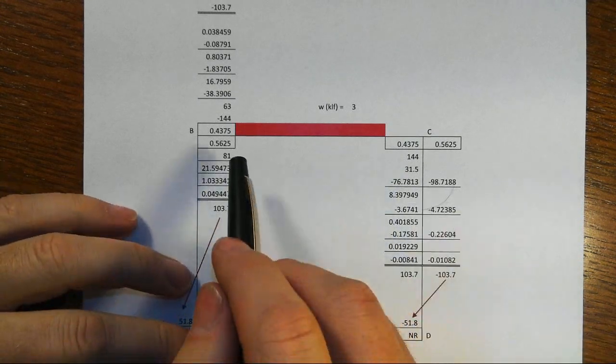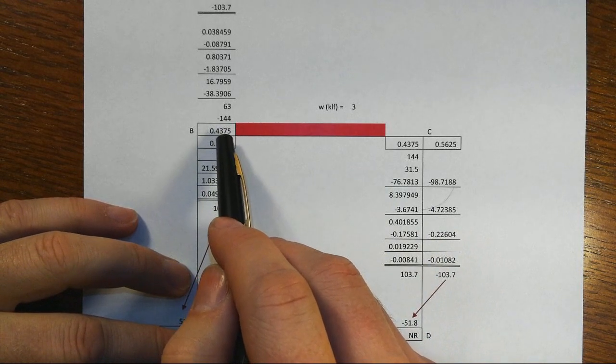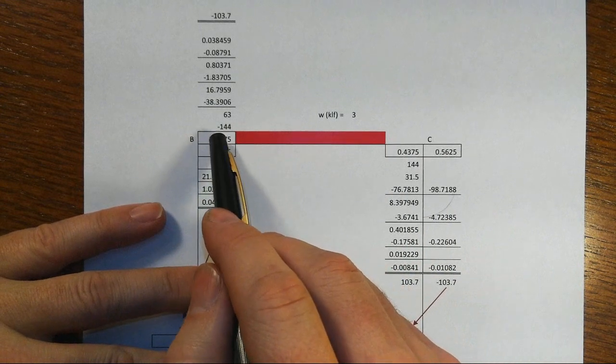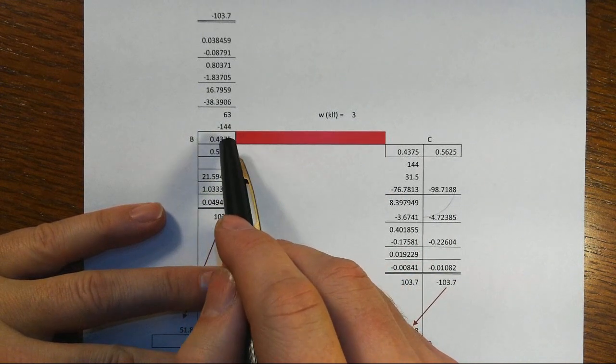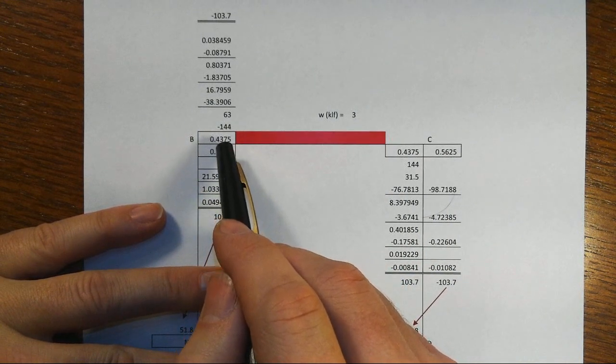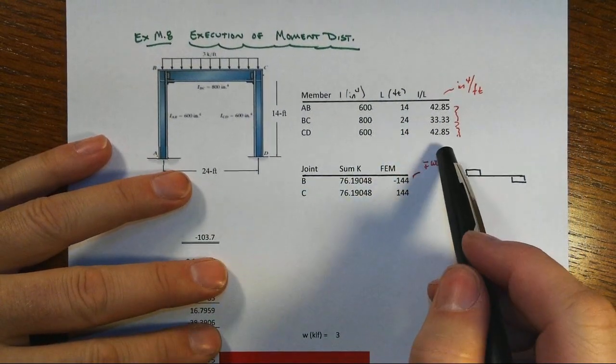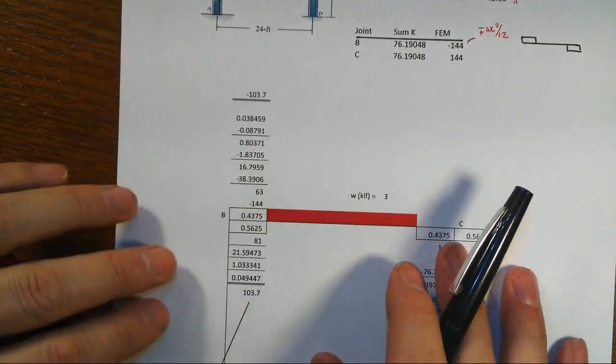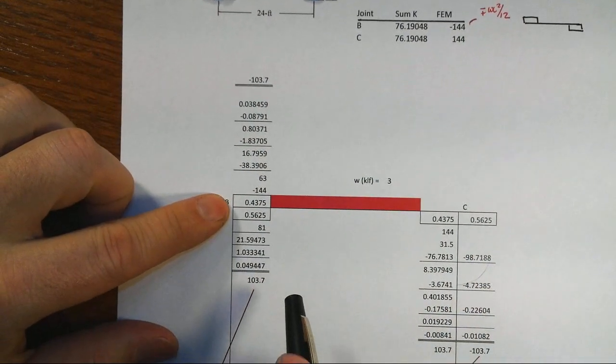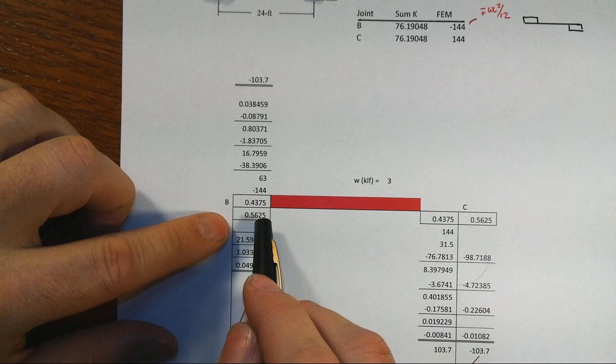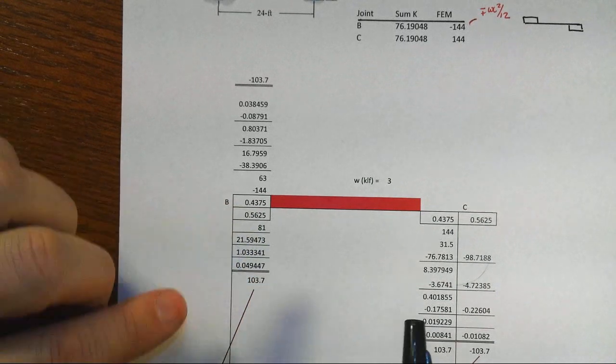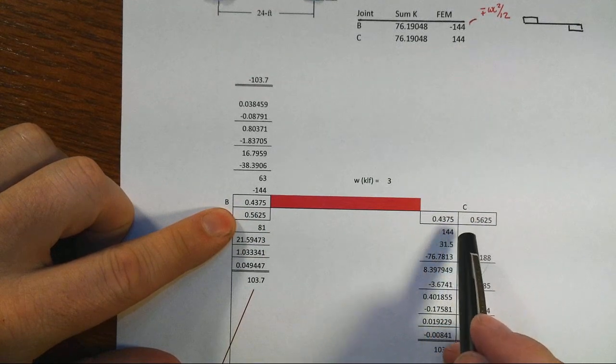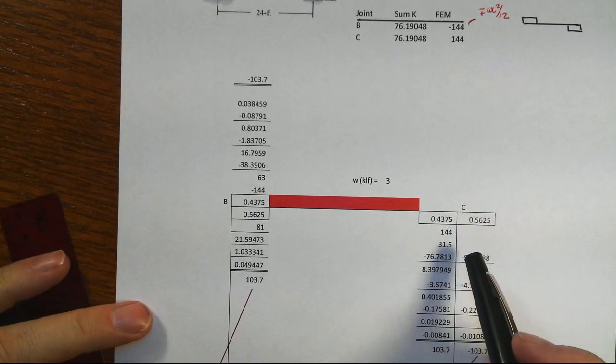We got the distribution factors for the members. Remember that's going to be taking the individual member's I over L and dividing it by the total sum that comes into the joint. Note the beam is more flexible than the column, so it's going to end up taking less, and that's what we have for the distribution factor for the beam, 0.4375. And 0.5625 is for the column. Likewise over here for the other side of things.